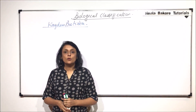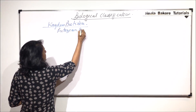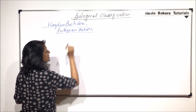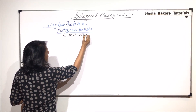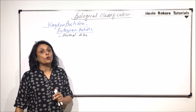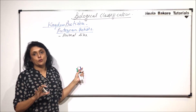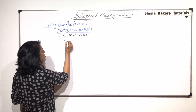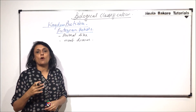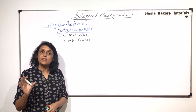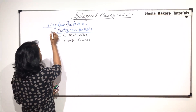We are now starting with another group of Kingdom Protista, and that is Protozoan Protists. They are animal-like protists, which means they are not photoautotrophs. They show different types of modes of nutrition but not photosynthesis. This is one of the most diverse groups — diverse means they show various types of locomotive structures, body shapes, and nuclei. Everything is variable.